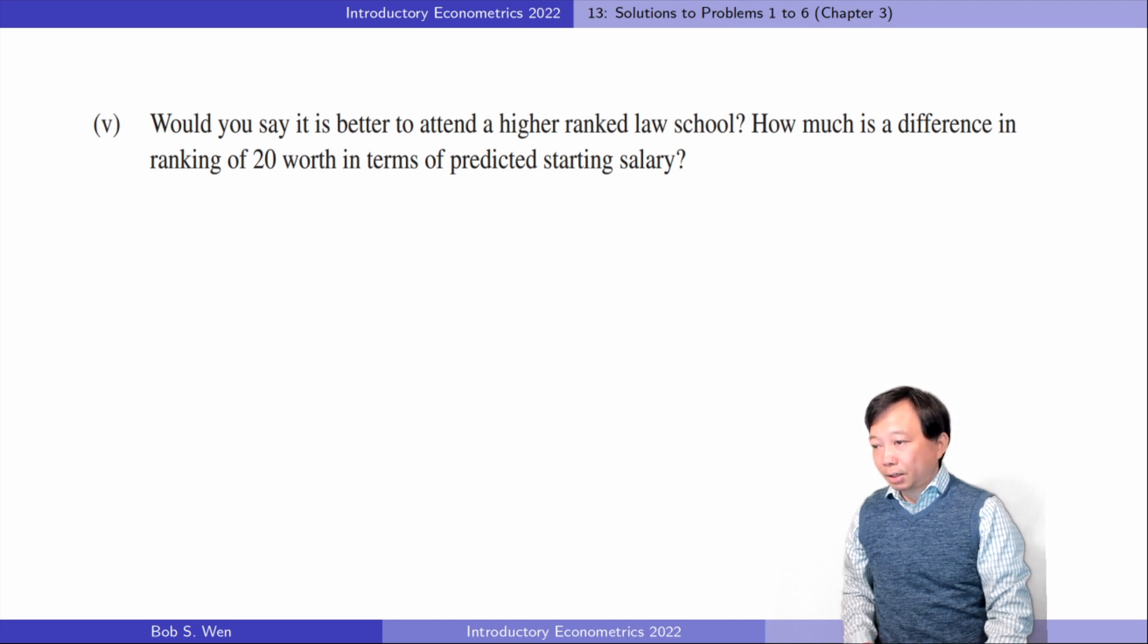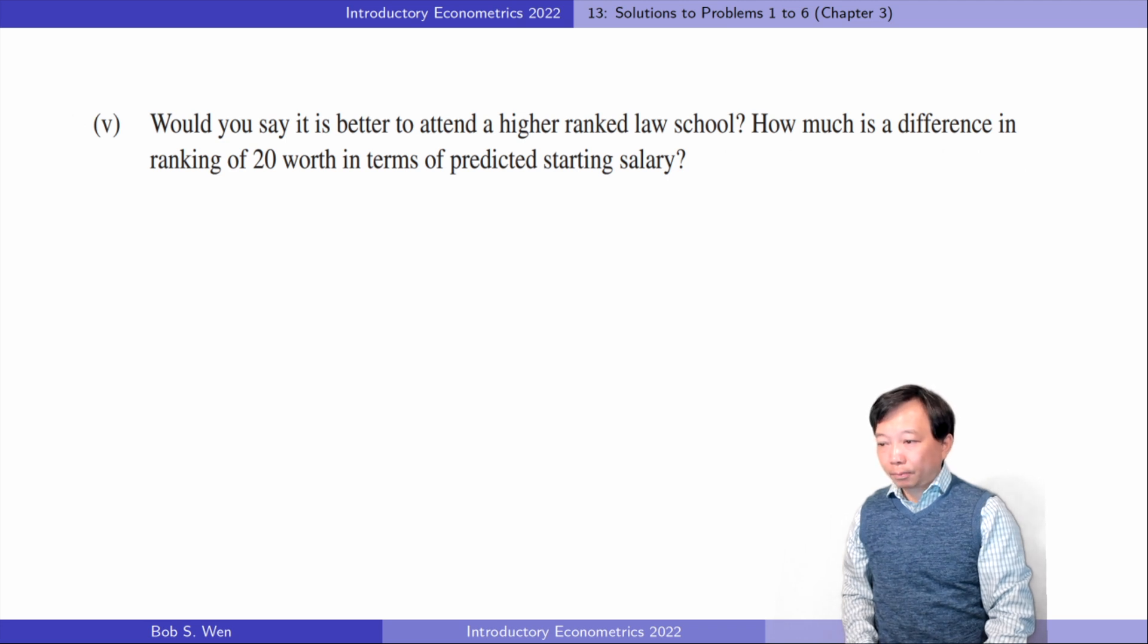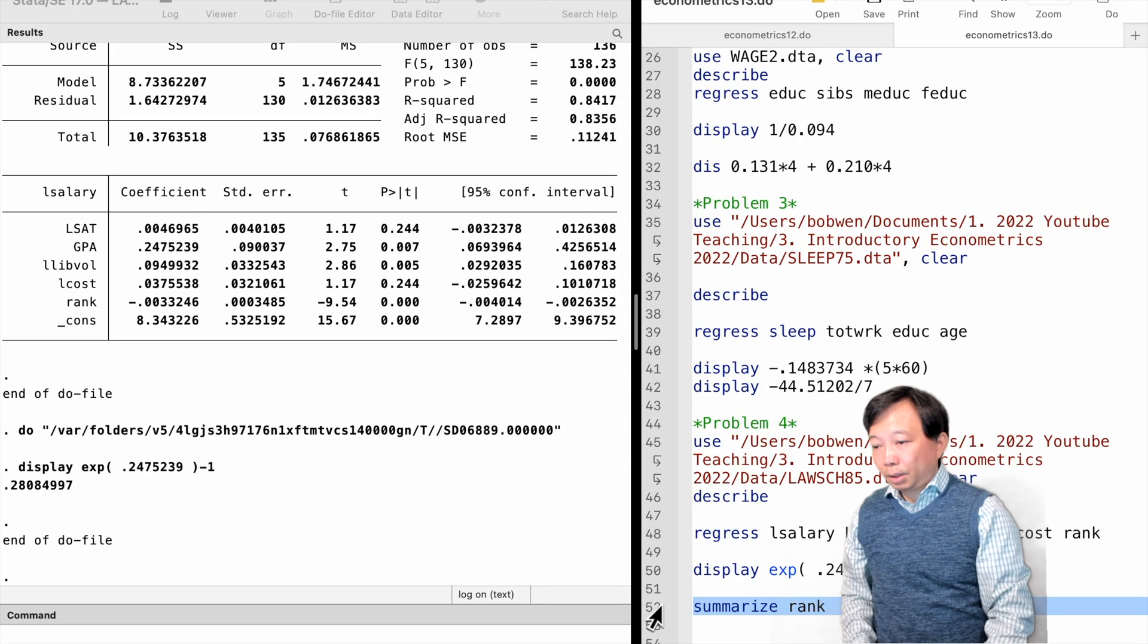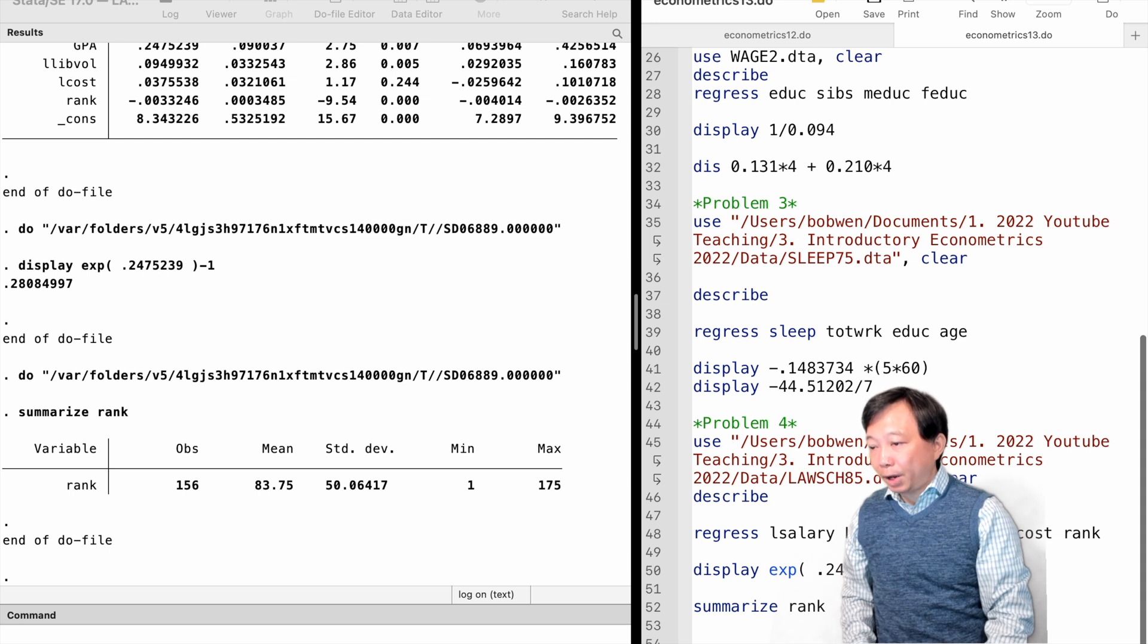For the last question, the median starting salary rises by 0.33% if the law school ranks at one higher point. If the increase in ranking is 20, the starting salary will rise by 6.6% on average, holding other factors constant. The range of rankings is from 1 to 175 in the sample. It is better to attend a higher ranked law school.